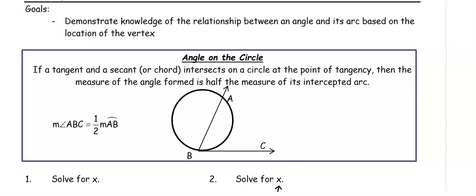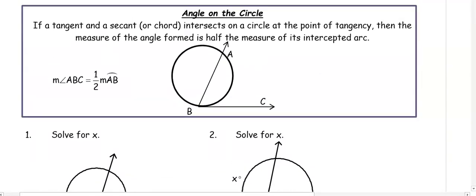We're going to talk about a couple of different angles in addition to the central angle and the inscribed angle that we have already learned about. The first angle is an angle that is on the circle. If a tangent and a secant or a chord intersects a circle at the point of tangency, then the measure of the angle formed is half the measure of its intercepted arc.